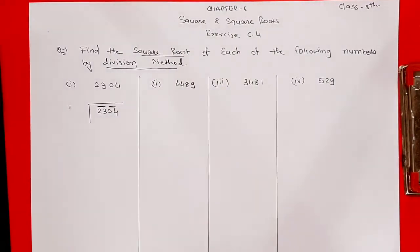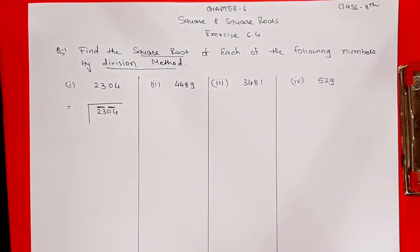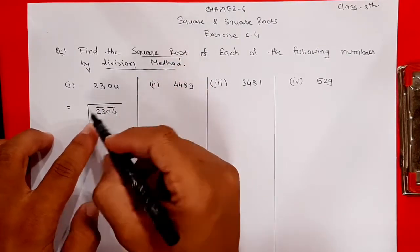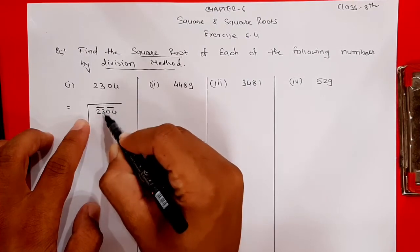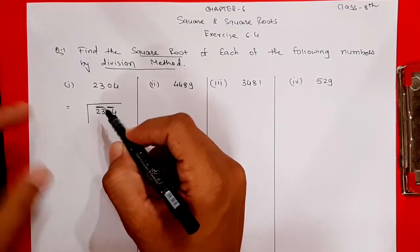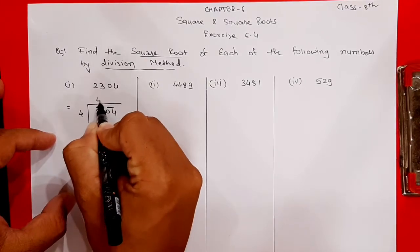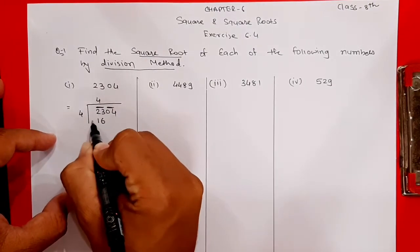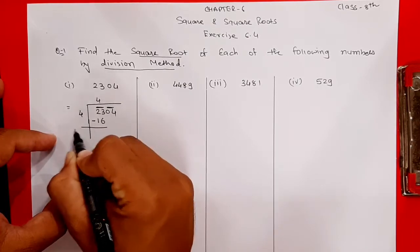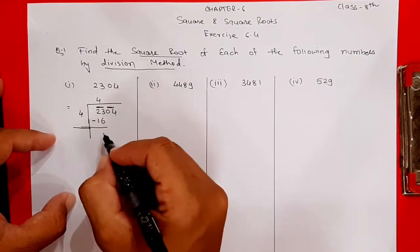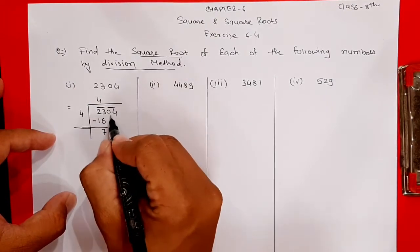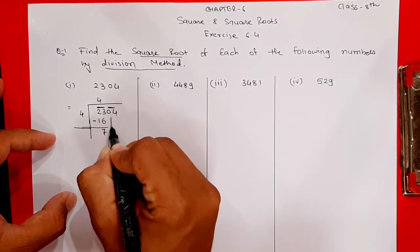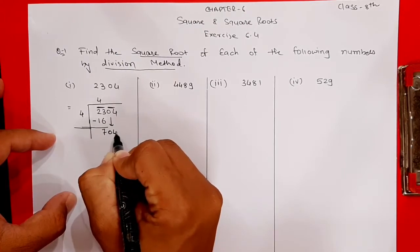Now recall squares: 1²=1, 2²=4, 3²=9, 4²=16, 5²=25. The first group becomes larger than 23 when we reach 5²=25, so we take 4². Four squared is 16. Now subtract 16 from 23, you get 7. Then bring down the entire second group of two digits, that is 04, so it becomes 704.